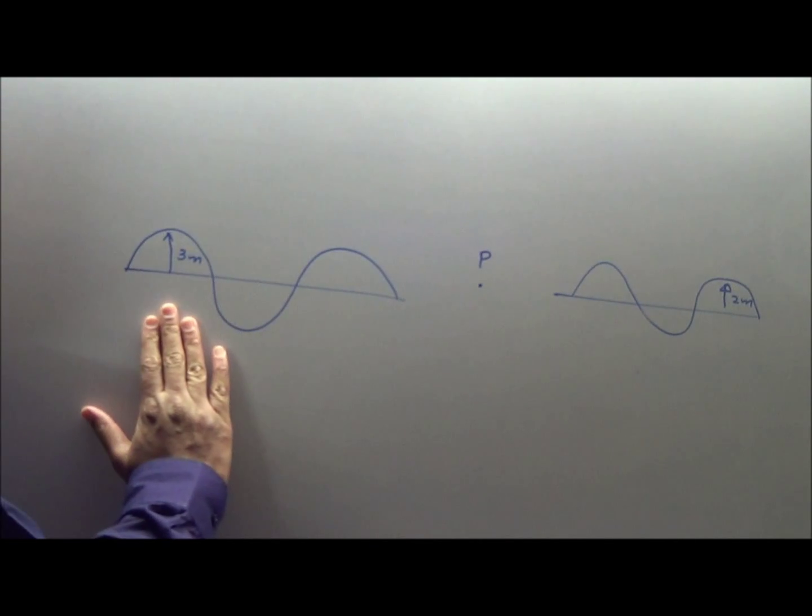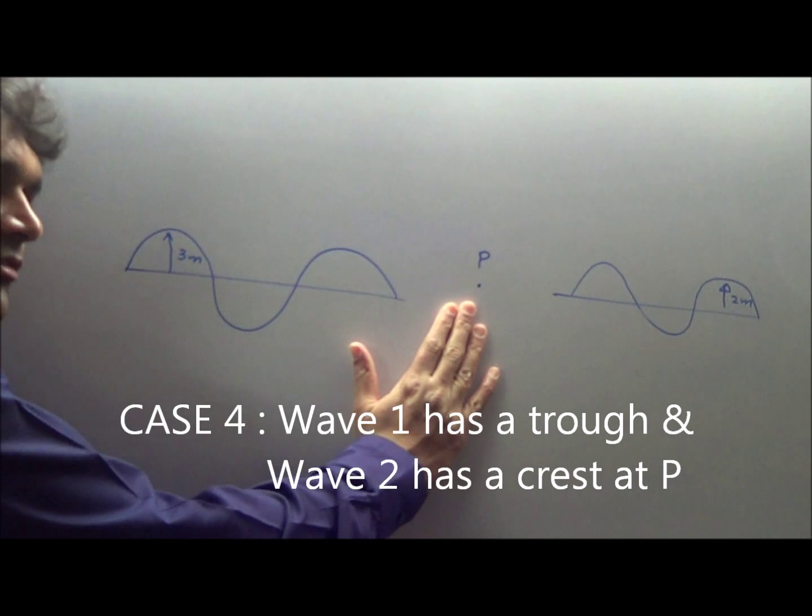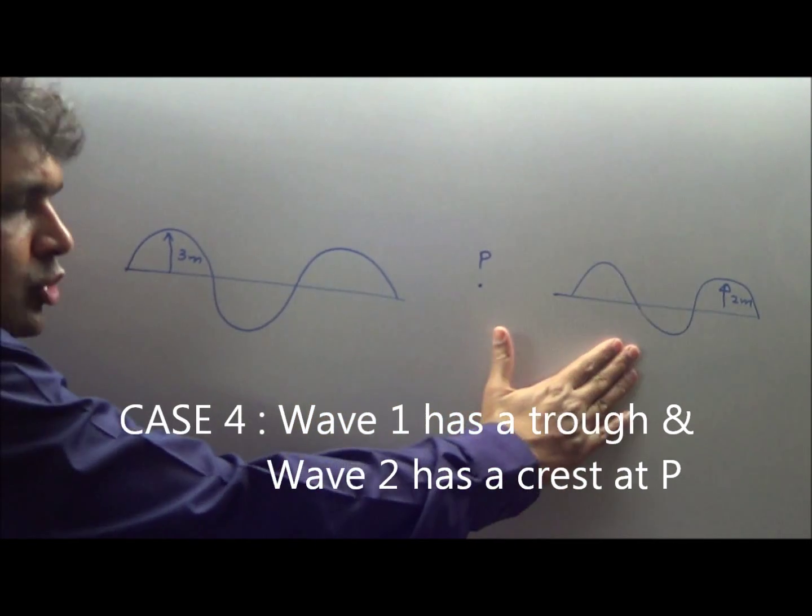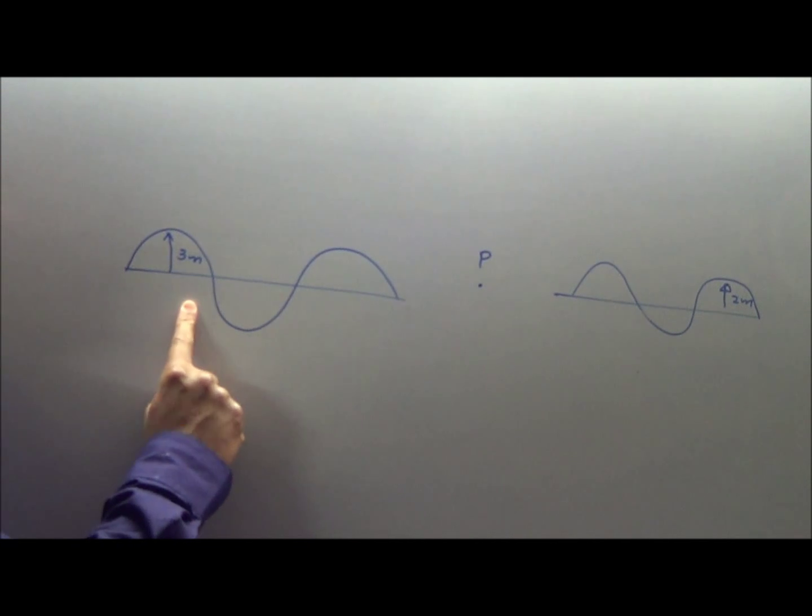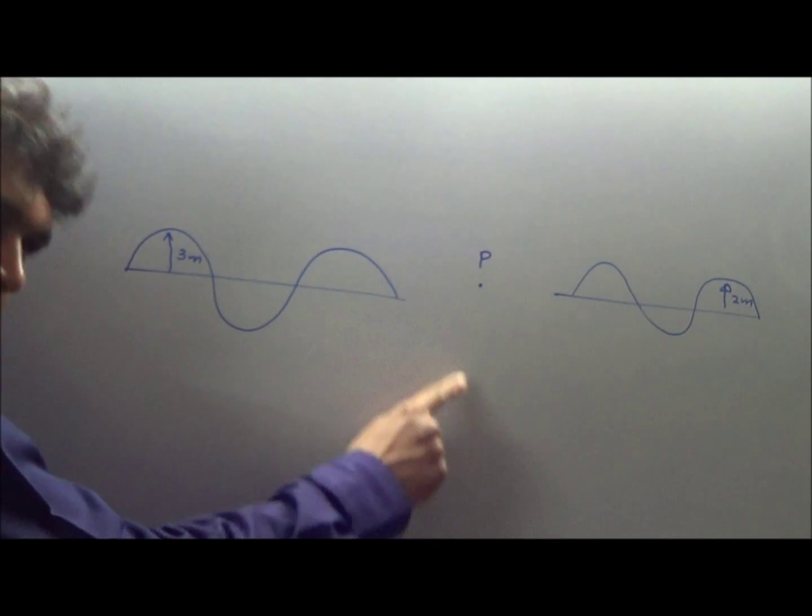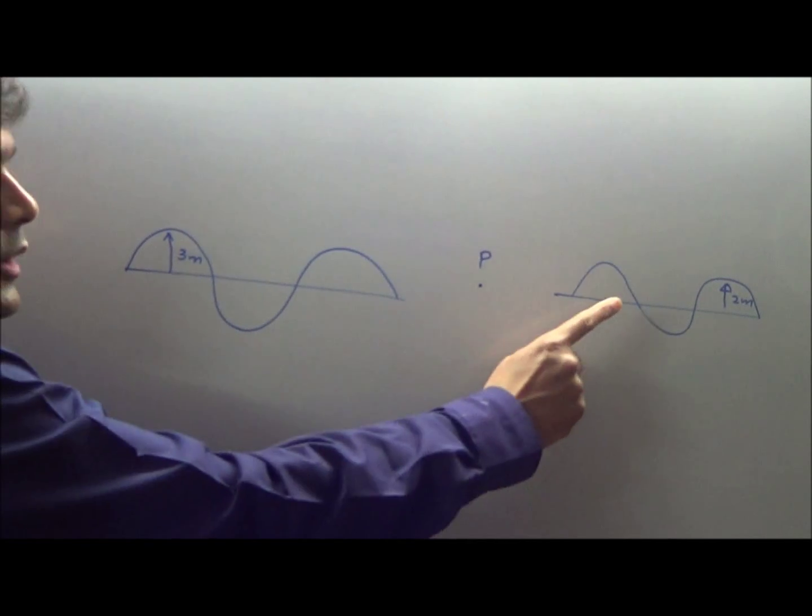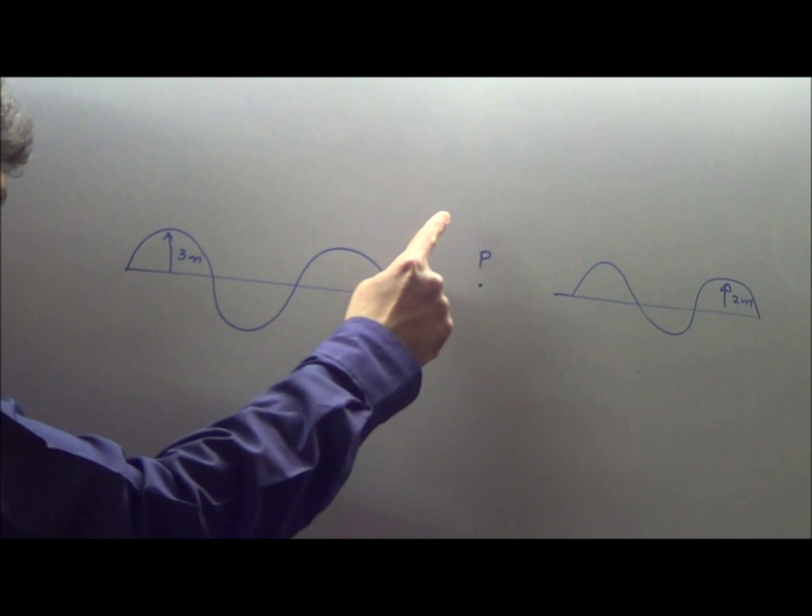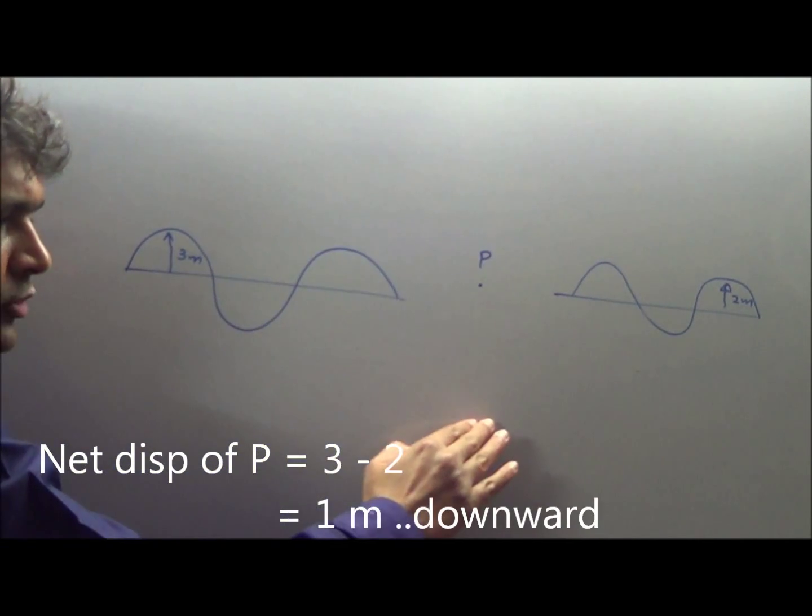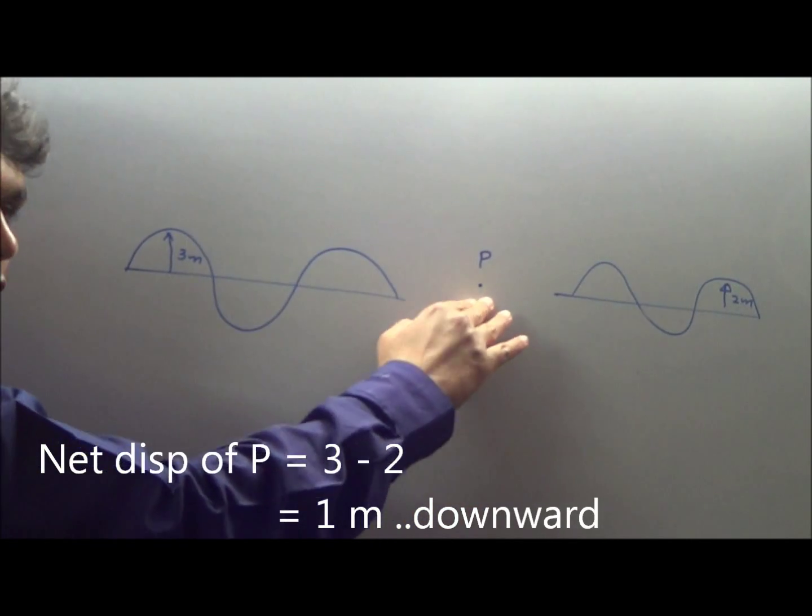Case 4: wave 1 might have a trough at P, wave 2 might have a crest at P. Wave 1, because it has a trough, will push P 3 meters down. Wave 2 will push P 2 meters up. Net 3 meters down, 2 meters up. P will move 1 meter down.